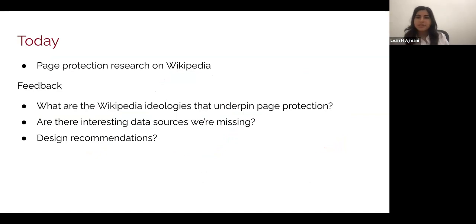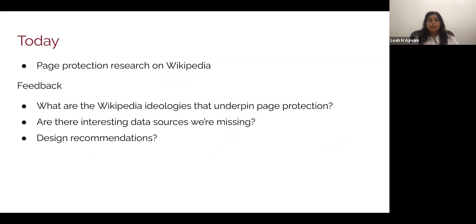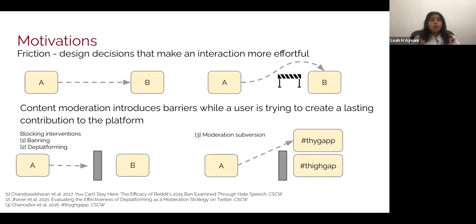I'm going to be presenting on page protection research we've been doing for about the past 18 months. I'd love to open up some dialogues about this work — specifically about the Wikipedia ideologies underpinning page protection, any interesting data sources we may be missing in our proposed methods, and some design recommendations. I'm curious if there are other design recommendations that align with the Wikimedia Foundation. To go over some terms: friction is a design decision that makes an interaction more effortful.